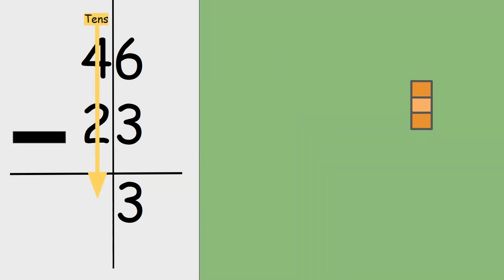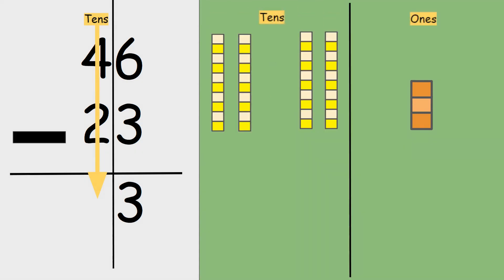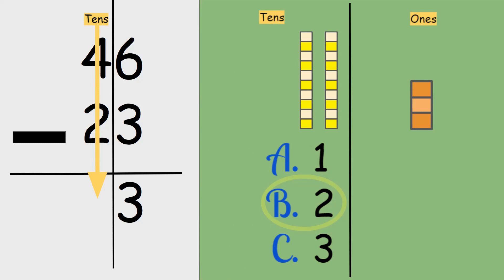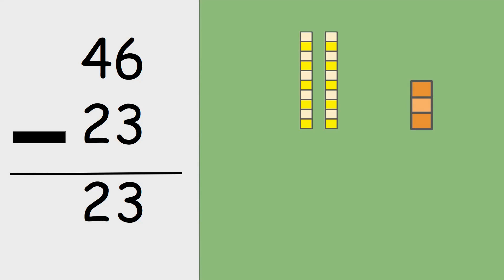Now to the tens: four take away two. Is the answer one, two, or three? Four take away two is two. So this tells me 46 minus 23 is 23.